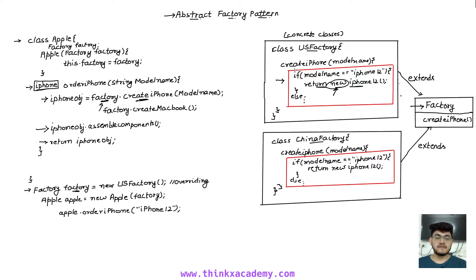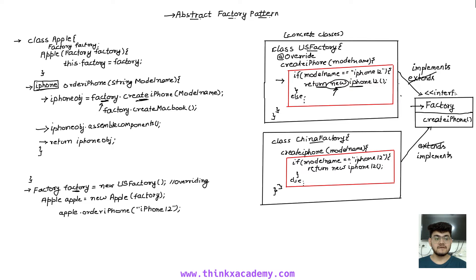We've already covered this in the dependency inversion principle — whenever we have tight coupling between classes, instead of using inheritance we can use abstraction. So instead of extending the factory class, I'm going to write implement. The US factory will implement the factory class, and the China factory will also implement the factory class. This factory now has only one function: create iPhone. Since we're now using an abstract class — actually an interface — that's where the name abstract factory pattern comes from.